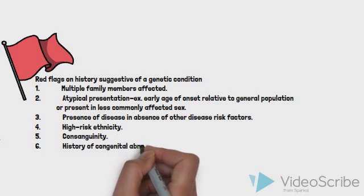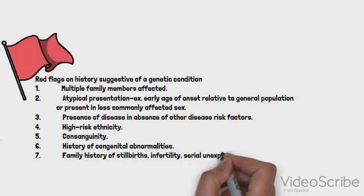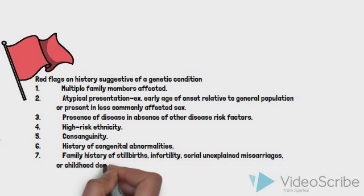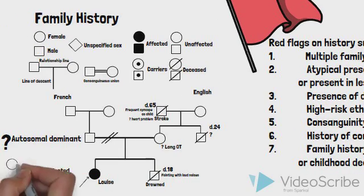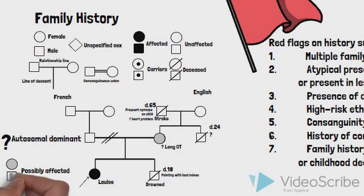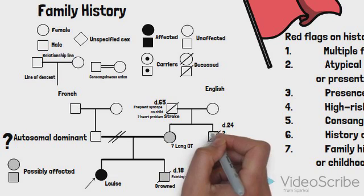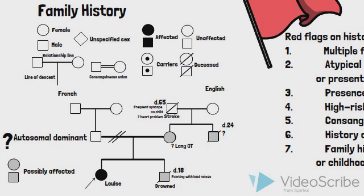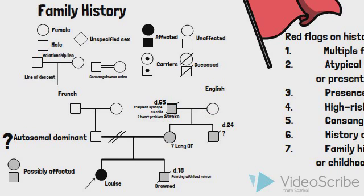Additional red flags include: 6. History of congenital abnormalities. 7. Family history of stillbirths, infertility, serial unexplained miscarriages, or childhood deaths. Your preceptor asks you to review your history to see which of these red flags are present in Louise's case. Specific red flags you identify include syncope triggered by physical exertion and auditory stimuli in Louise and her brother, unexplained sudden death in an otherwise healthy young person in Louise's uncle and brother, and prolonged QT in her mother. Her grandfather may have had a long QT interval as well.